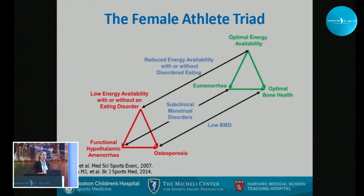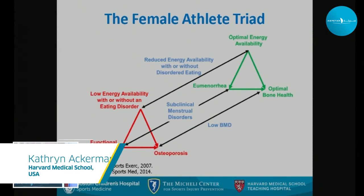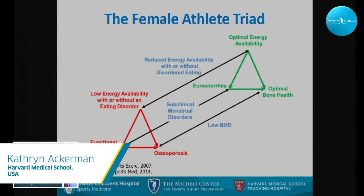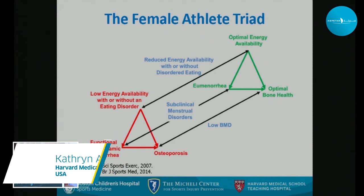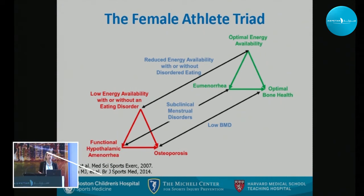It is a term that first was initiated in the early 1990s, based on a lot of work initially from Barbara Drinkwater's group. There was this correlation that people noted between relative energy deficiency — not enough calories for how much people were expending in sport — and then menstrual dysfunction, and then poor bone health.